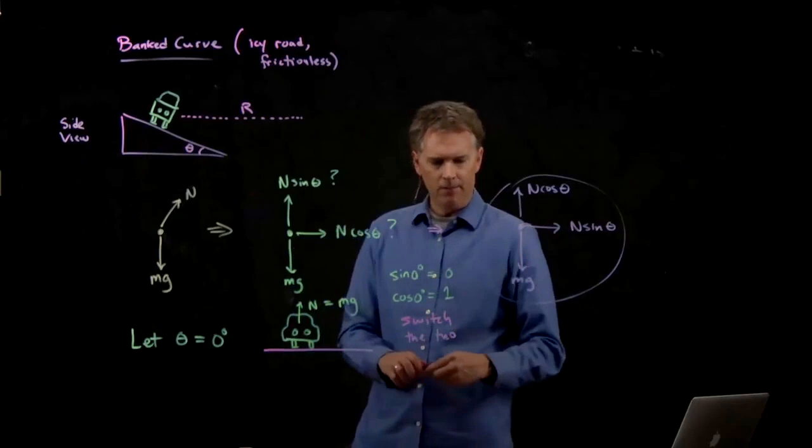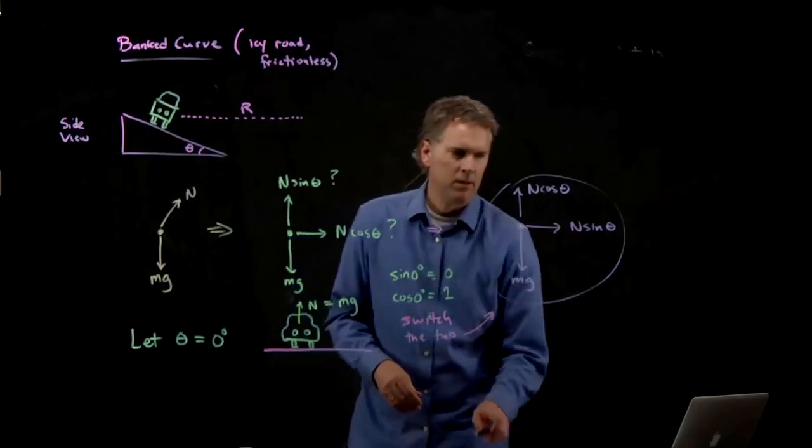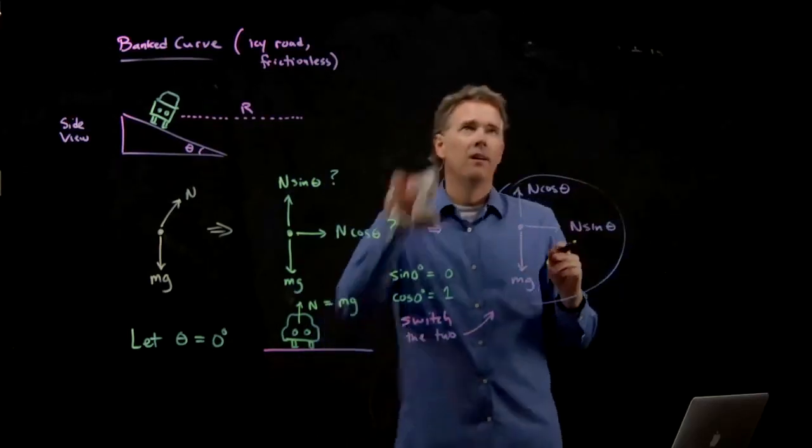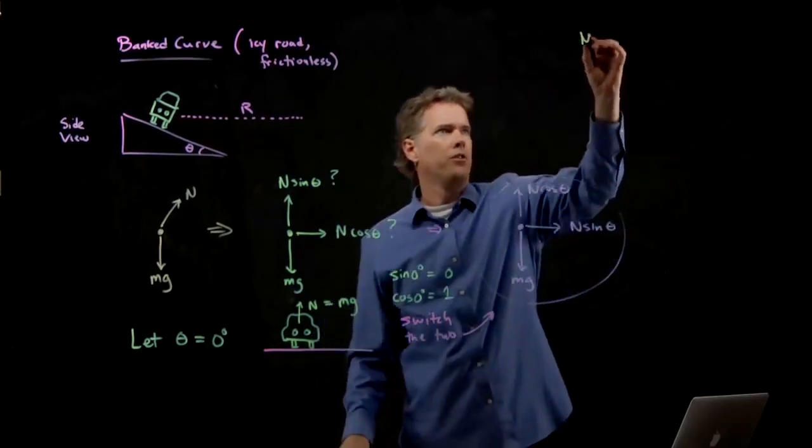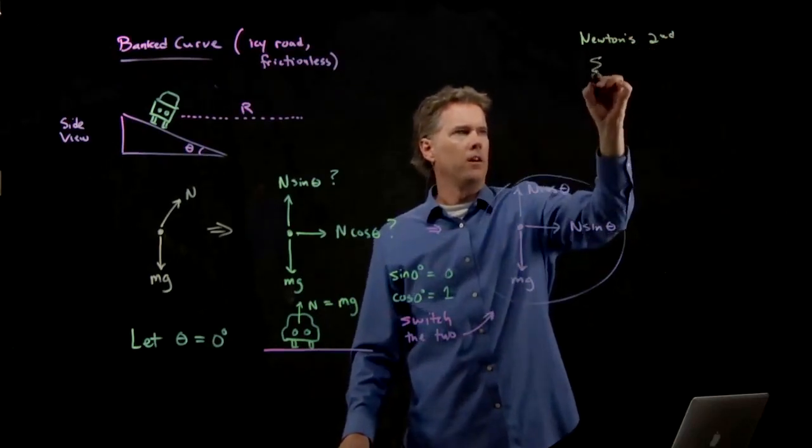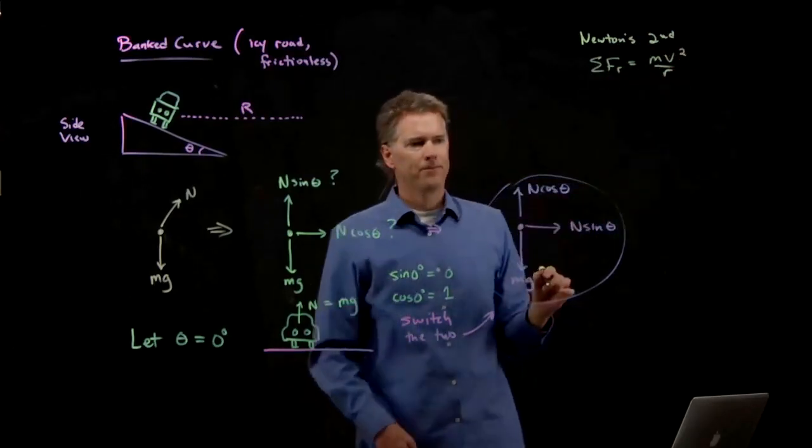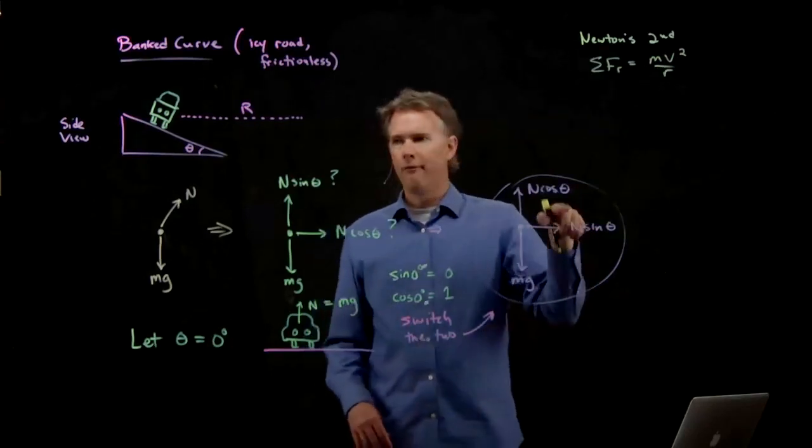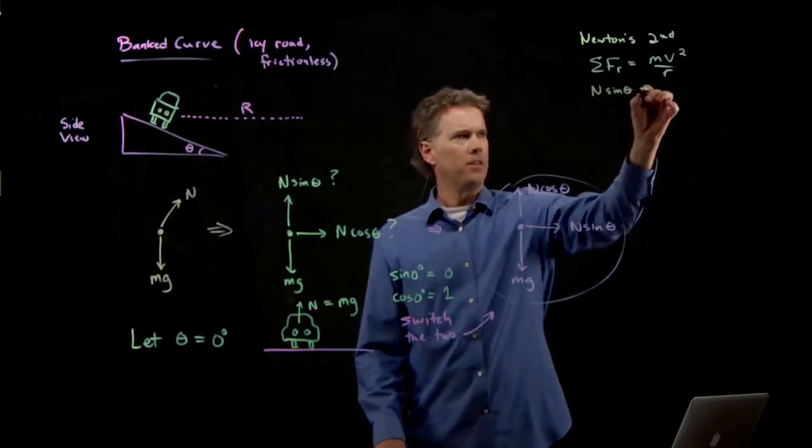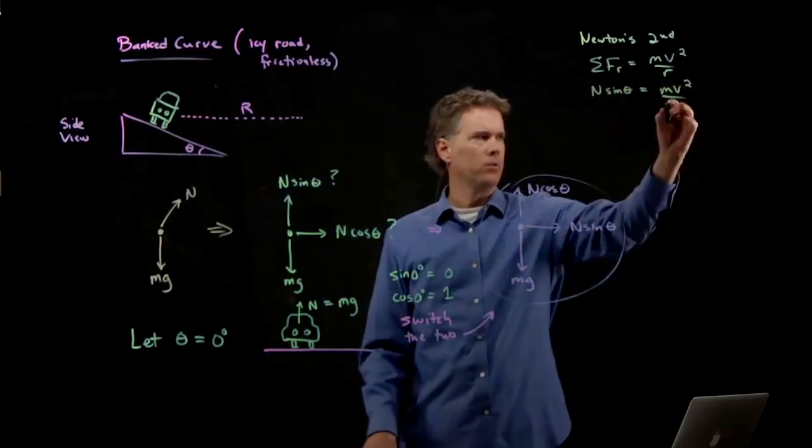Now that we have that right, what do we do next? We got our picture, we got our free body diagram, now we go to Newton's second law. And Newton's second in circular motion says sum of the forces in the radial direction equals mv squared over r. There's only one force in the radial direction. It's n sine theta. So we get n sine theta equals mv squared divided by the radius, which we said was r.